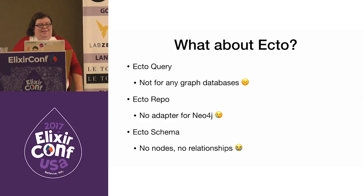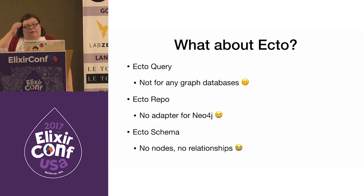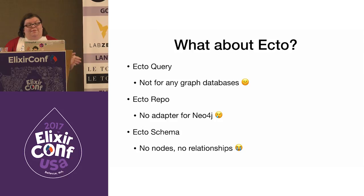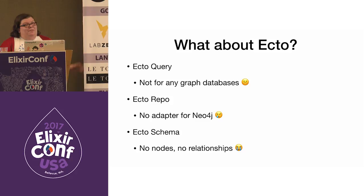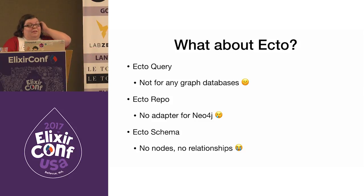The biggest challenge with using Neo4j in Elixir is Ecto. Ecto is composed of Ecto Query, Ecto Repo, and Ecto Schema. Ecto Query was designed for SQL databases and doesn't share the same keywords that Cypher uses — there's no one-to-one translation of Ecto Query to Cypher, so Ecto Query won't work for our purposes. Ecto Repo doesn't have an adapter for Neo4j, and Ecto Schema doesn't support nodes and, more importantly, relationships.